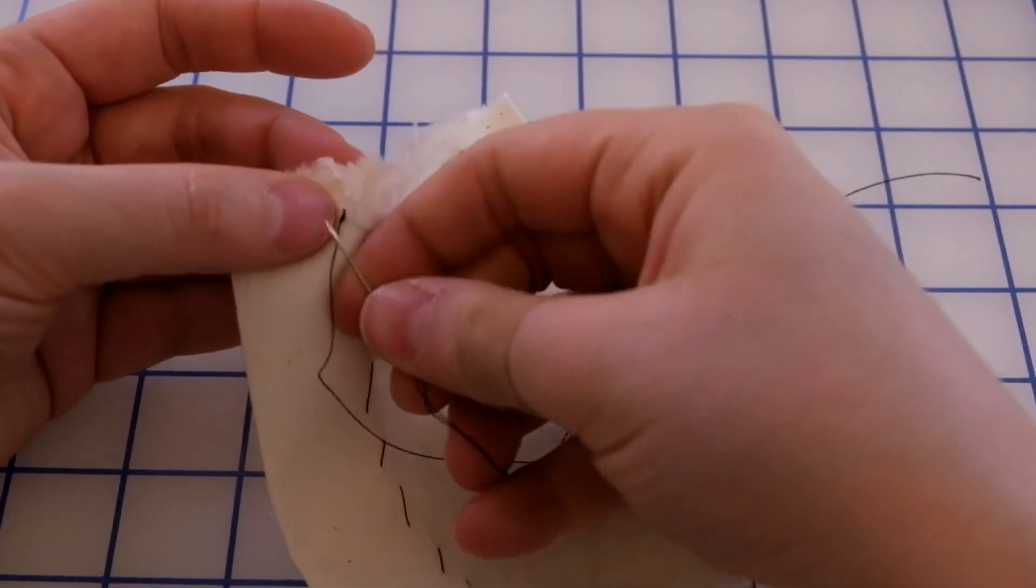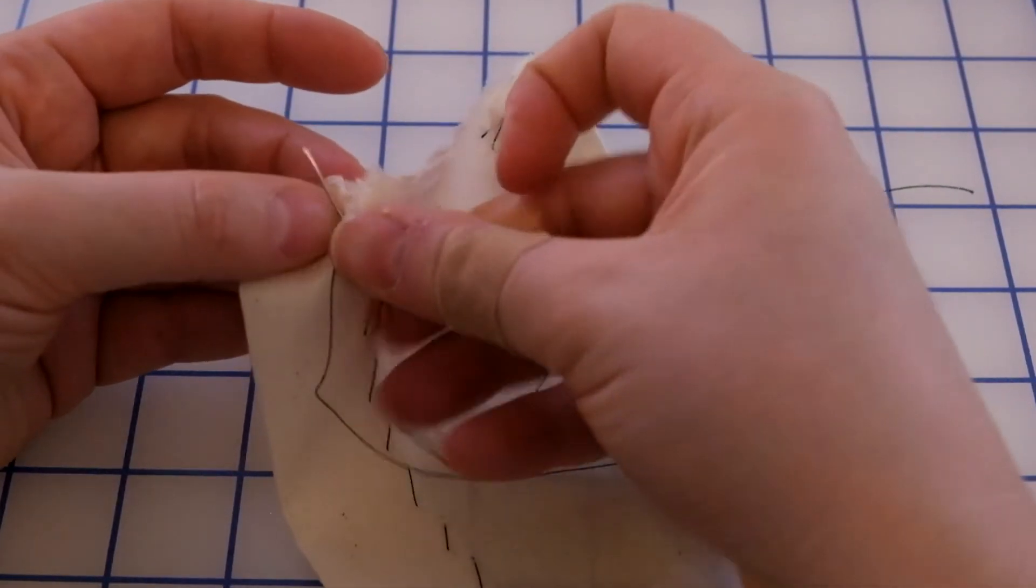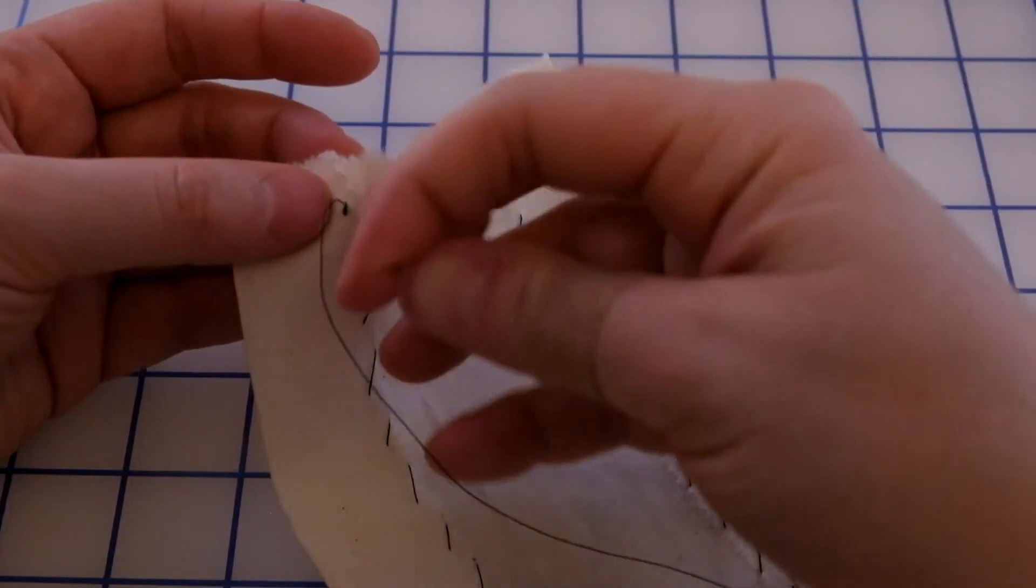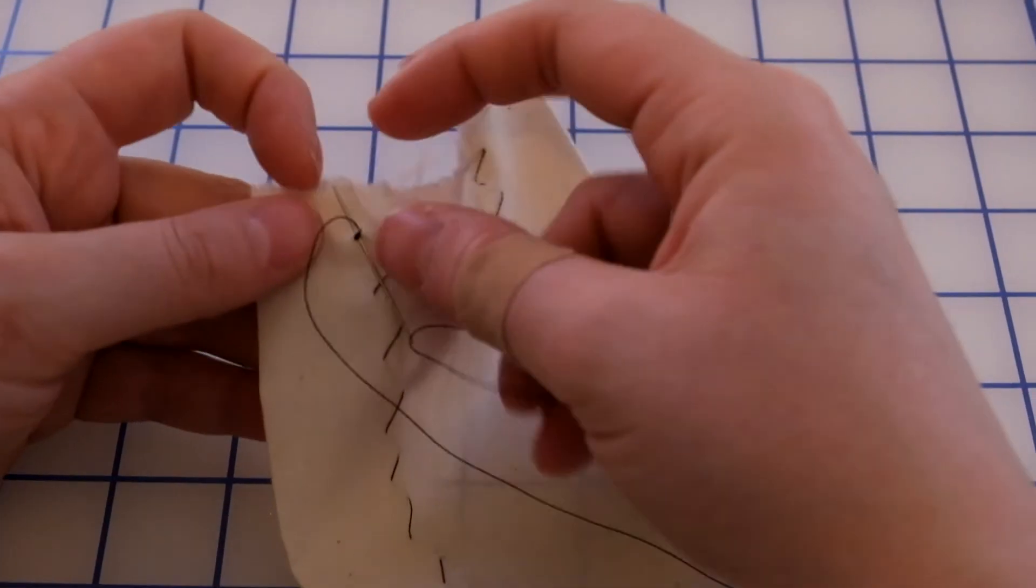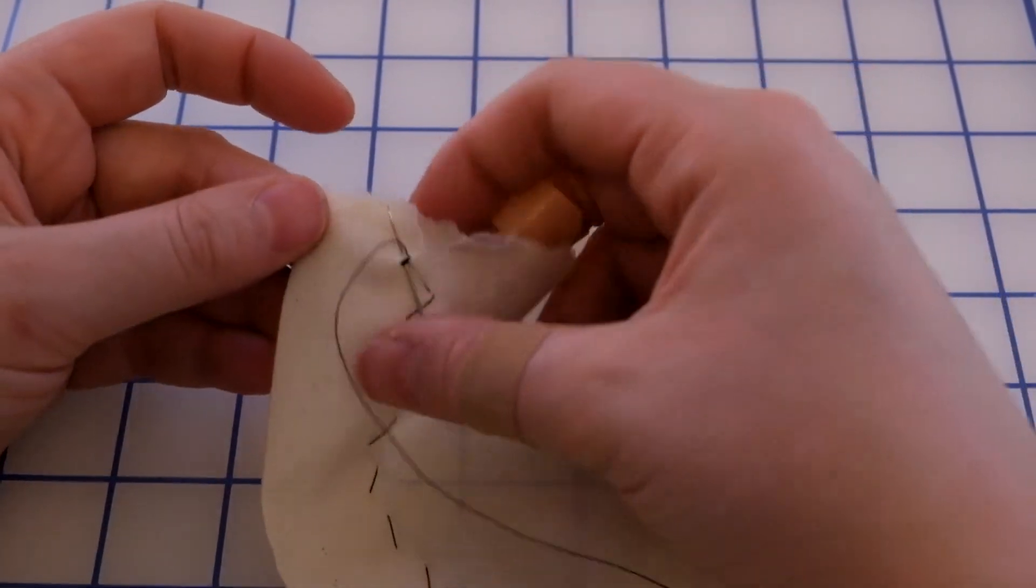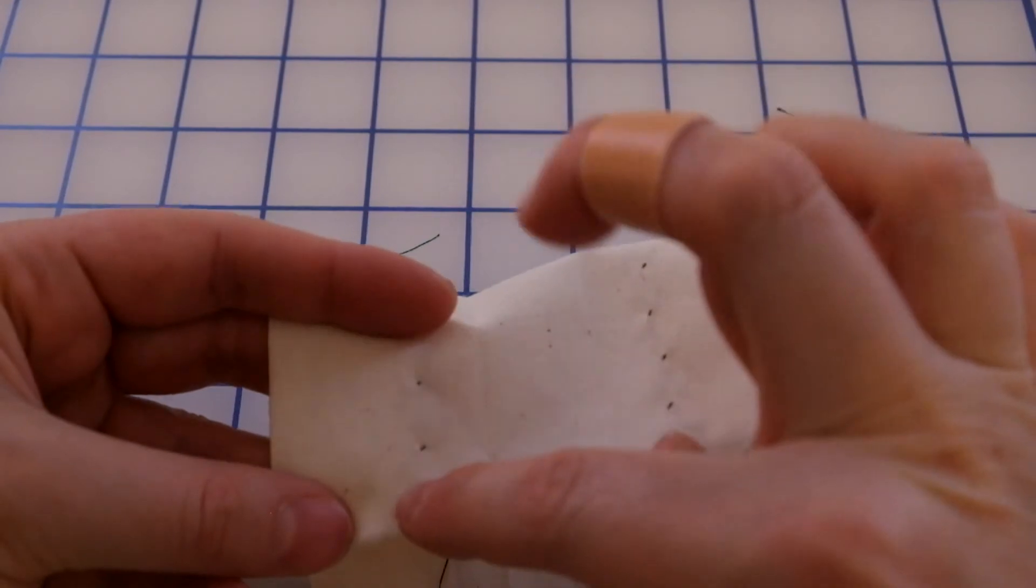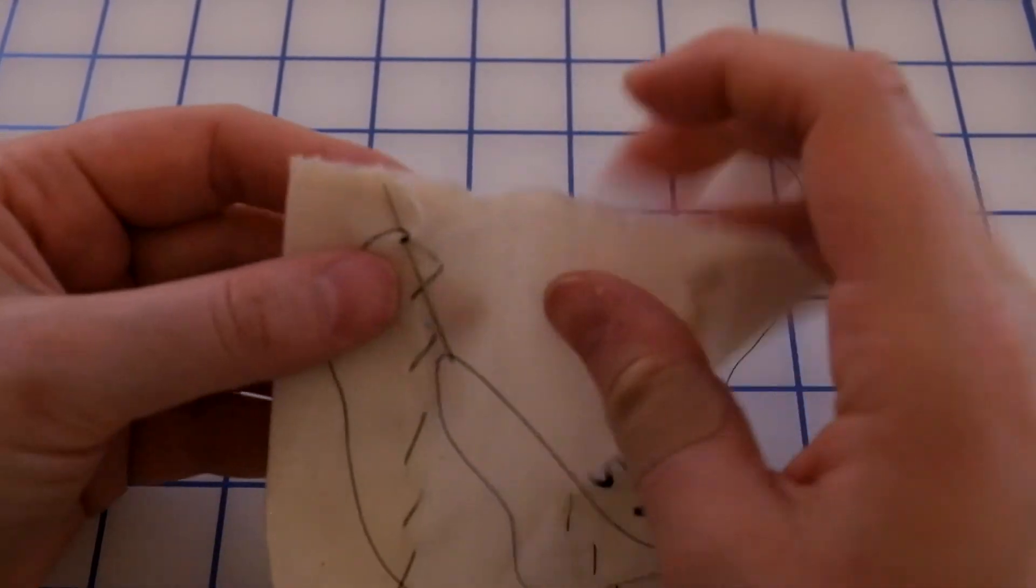Then you're just going to stitch over that. With the knots on the hemming stitch, you want to make sure that you're just stitching through the folded up part of your fabric so you won't see where the knot is on the back.